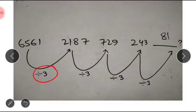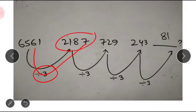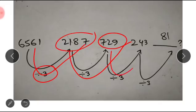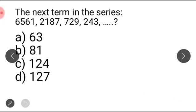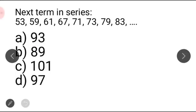Each term is divided by 3. So 243 divided by 3 equals 81. Our answer is 81. It's easy.